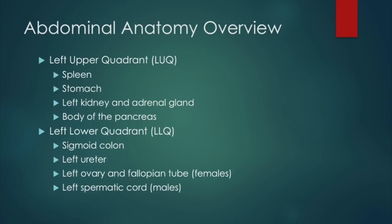Within the left upper quadrant, we have the spleen, stomach, the left kidney and adrenal gland, and the body of the pancreas. Within the left lower quadrant, we have the sigmoid colon, the left ureter, the left ovary and fallopian tube, and the left spermatic cord.